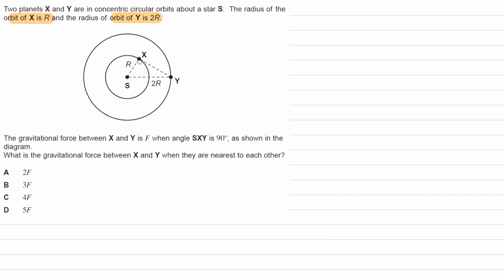We're then told the gravitational force between X and Y is F when the angle SXY is 90°. So this angle is 90°, and the force between X and Y in these two positions is F.